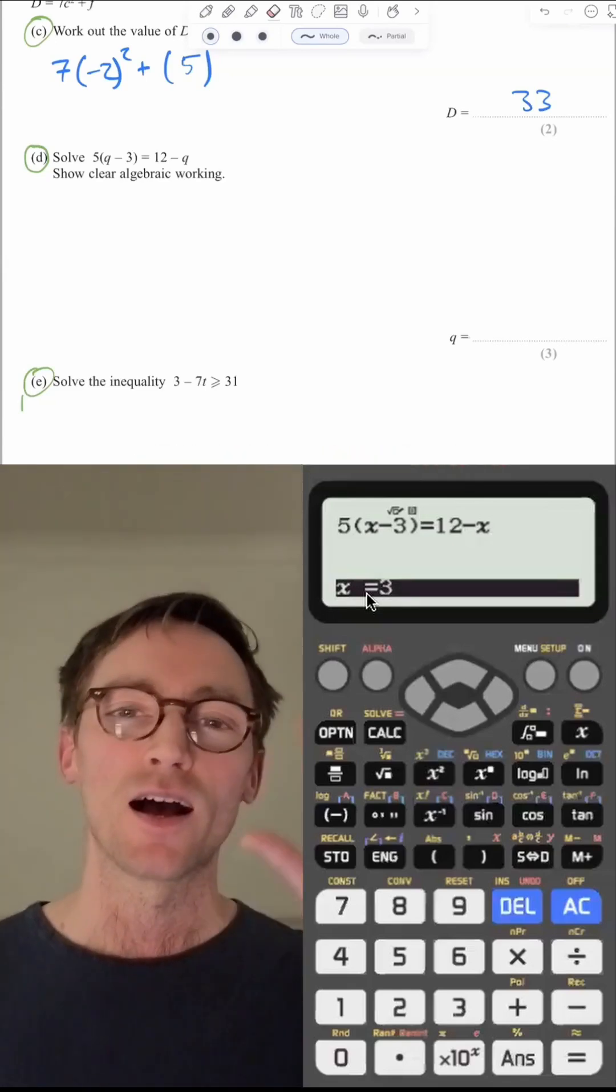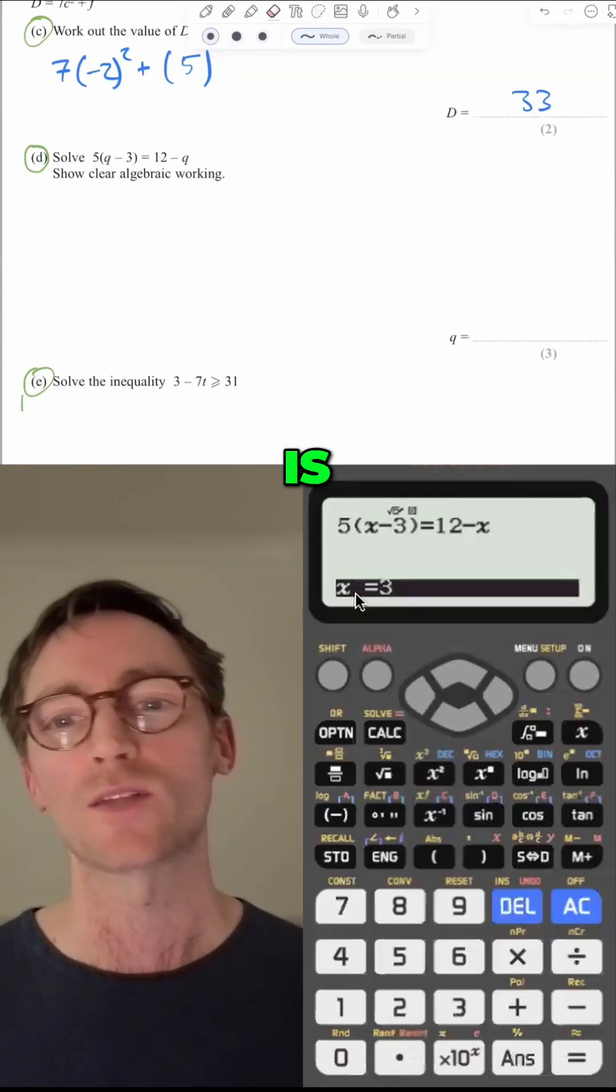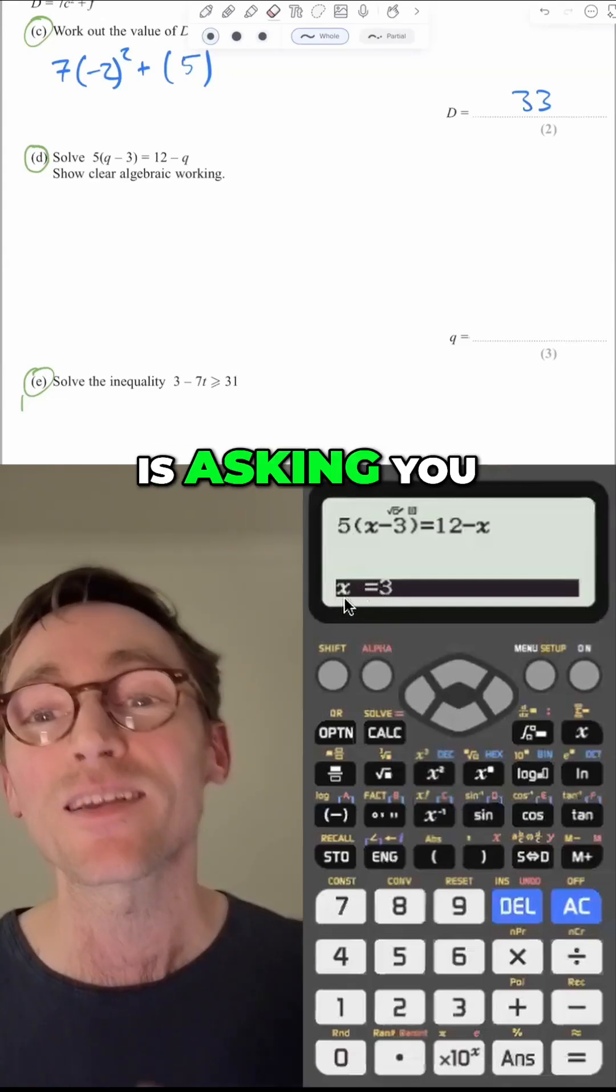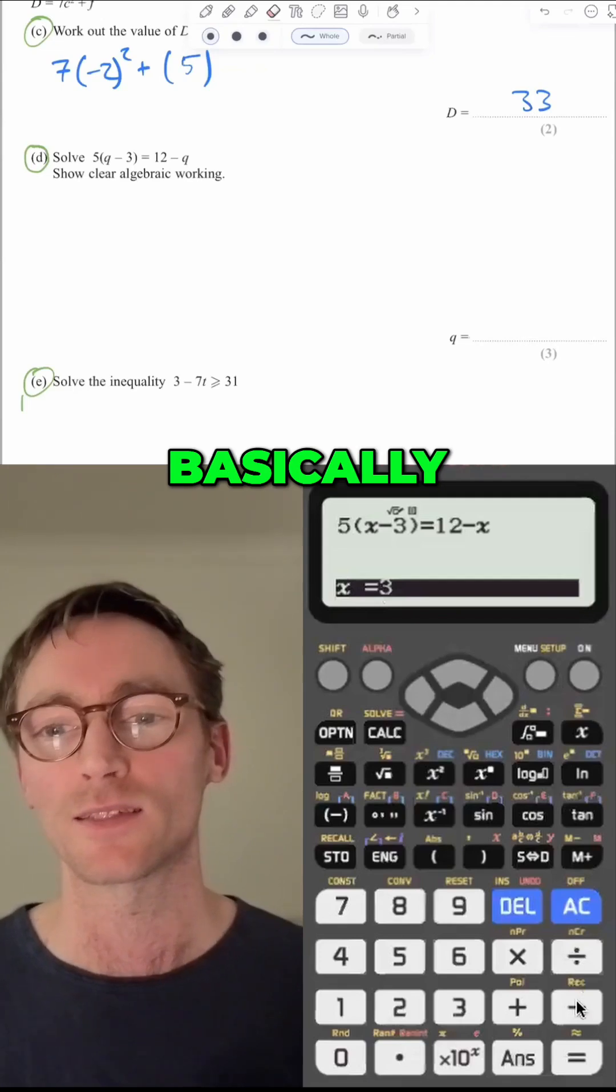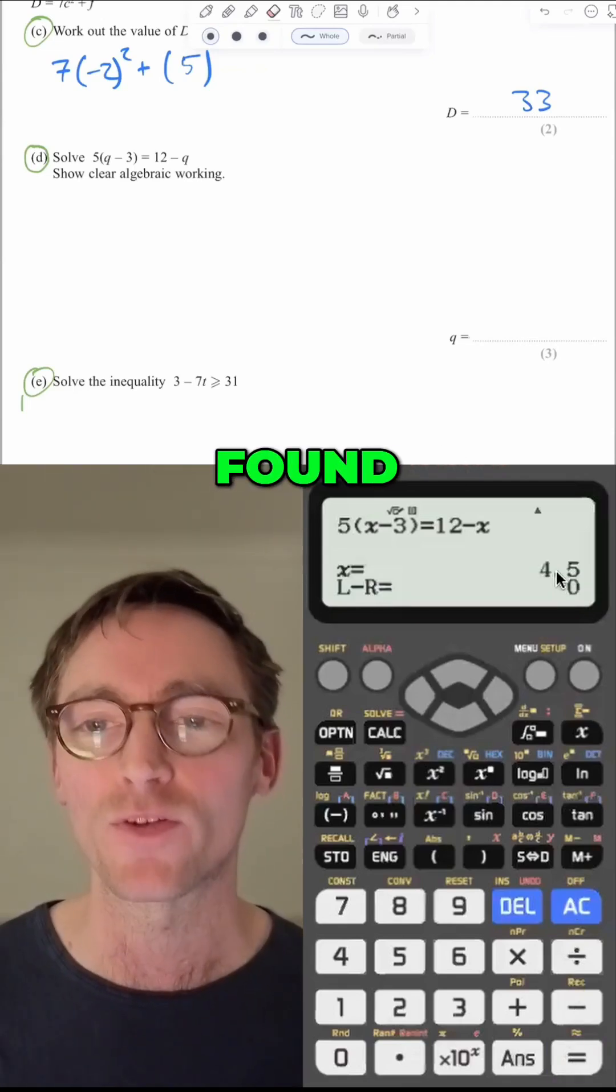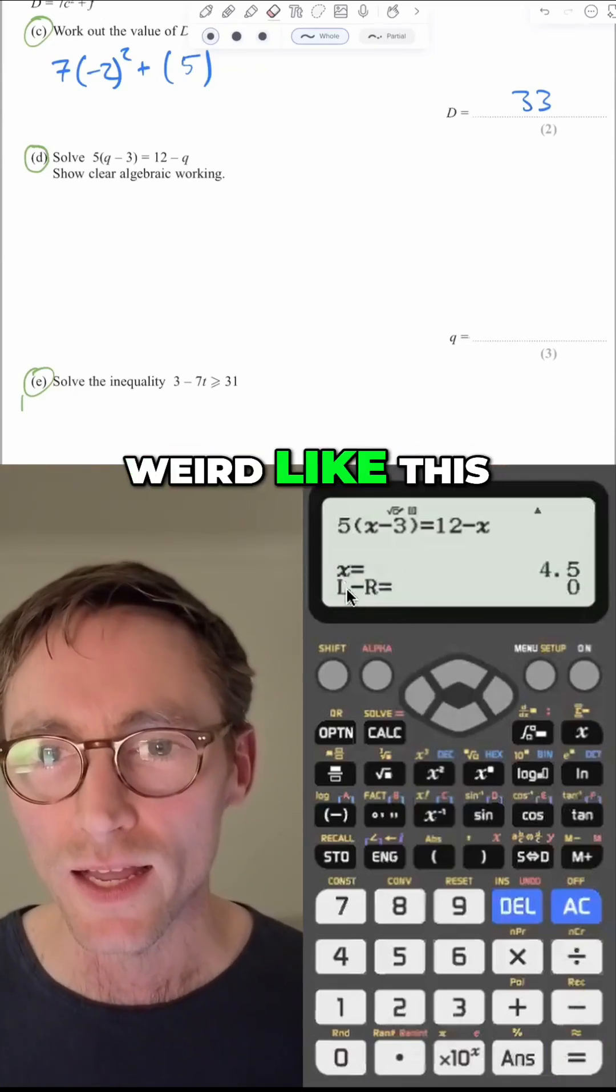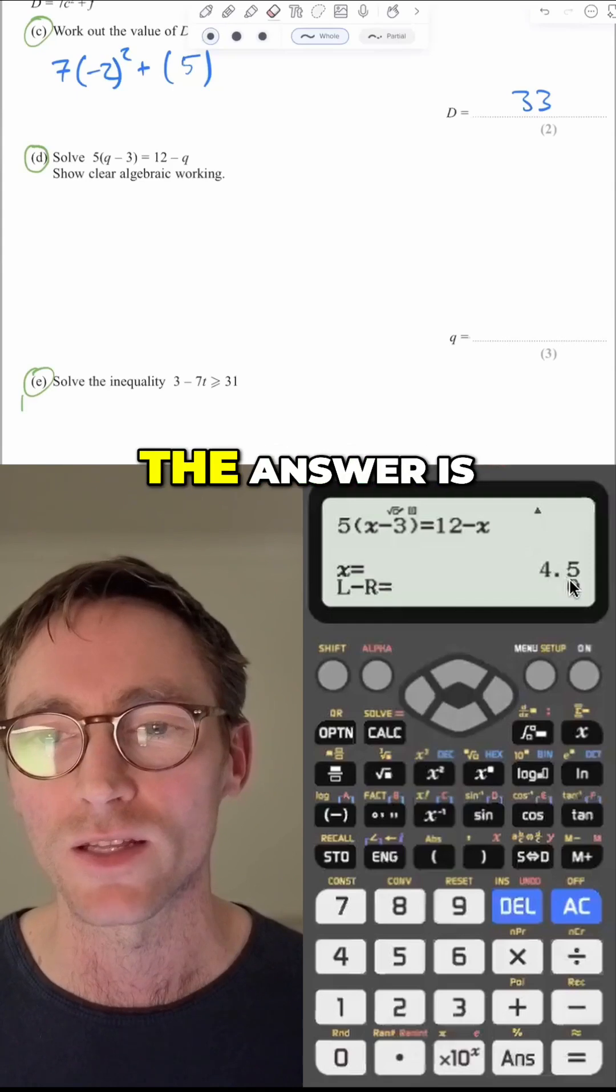You have to hit equals again. I'm not going deep into why that is. What your calculator is doing is asking you for a starting value and it's going to do this weird thing where it zeroes in on the answer, basically. So you hit equals and now it's found the answer. And so it will always look weird like this, but the L minus R, just ignore it. The answer is 4.5.